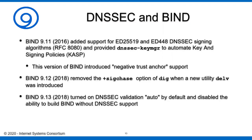The negative trust anchor basically allowed a large operator who recognized a broken zone that had DNSSEC deployed — but for some reason was deployed in such a way that it was failing for not a good reason, usually due to a failed key rollover — to insert a negative trust anchor that allowed that zone to continue to work instead of giving back SERVFAIL.